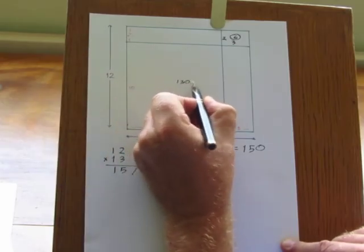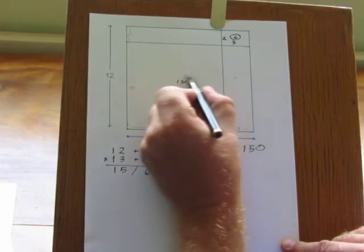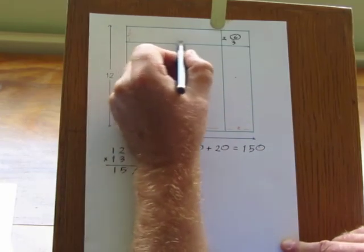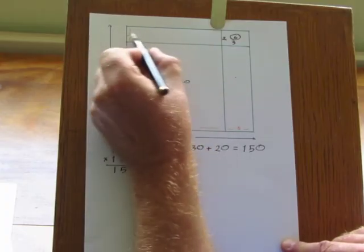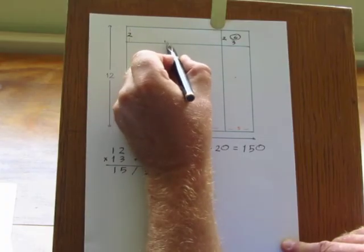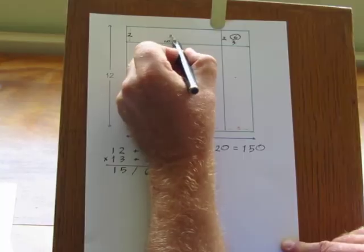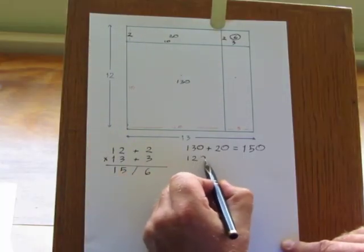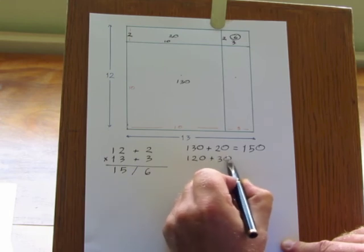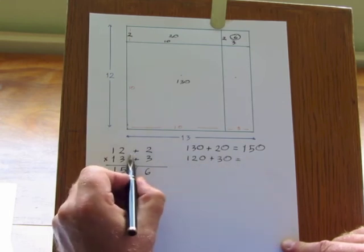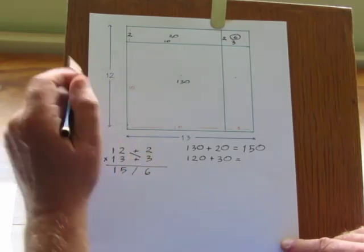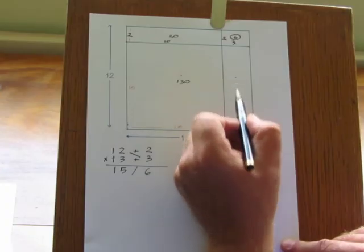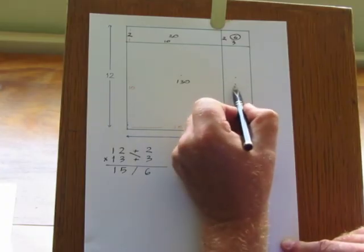Well the 130 is the 13 along here multiplied by the 10. So these two rectangles together, this one and this one, give an area of 130. And this rectangle along the top here is 2 by 10, giving 20. And if you look at it the other way around, 120 add 30, the cross addition in this direction. 120 is these two rectangles, and the 30 is this one here.